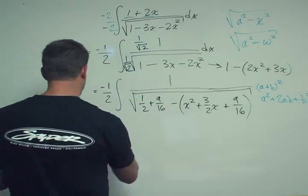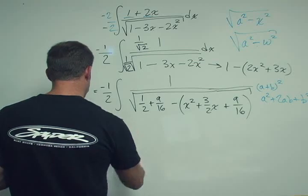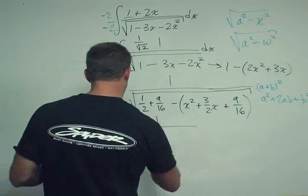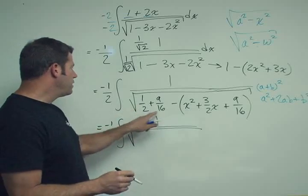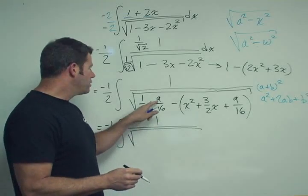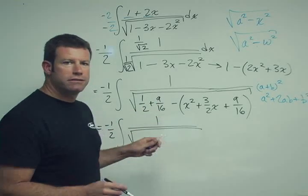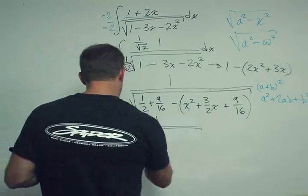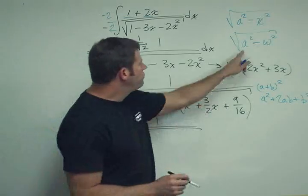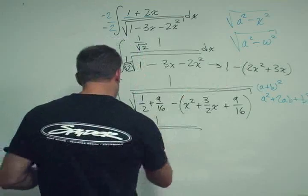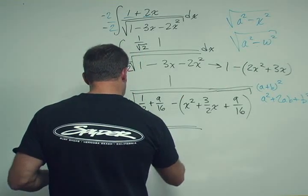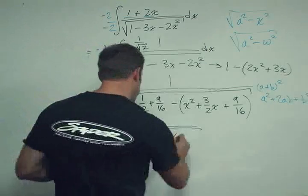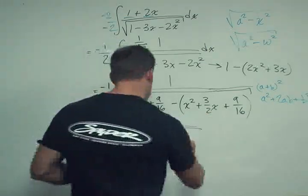So now we can rewrite this. Square root 1 half plus 9 sixteenths, so this is 8 sixteenths plus 9, 9 plus 8, 17 sixteenths. And since we want it to be in a squared form, I'm going to say this is the square root of 17 sixteenths squared, right? Minus, and then this becomes x plus 3 fourths.